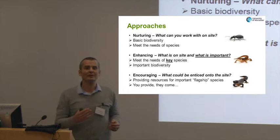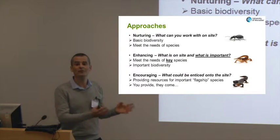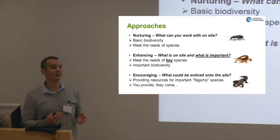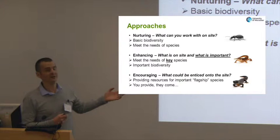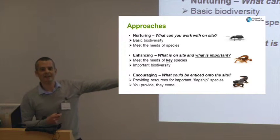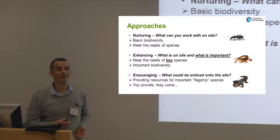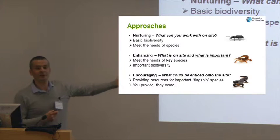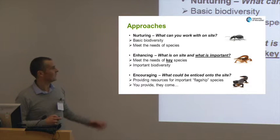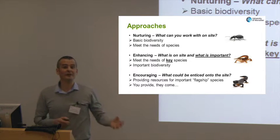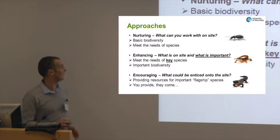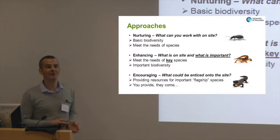You can set the bar a little bit higher — you can actually look at enhancing what you've got, and this is where the monitoring side of things really comes in. If you know what you've got at your site then you can start looking at how you can enhance that. So here I've got a common newt — a smooth newt — and we do have those on campus. We can look at how we can enhance their abundance on the St. John's campus. So this is the important biodiversity approach.